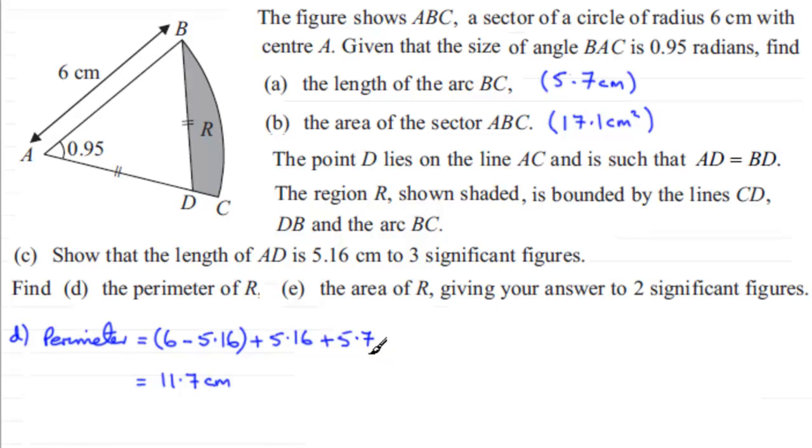Now for the next part we've got to work out the area of the region R, giving our answer to two significant figures. And to get that area what we need to do is work out what the area of the triangle ABD is and subtract it from the area of the sector ABC.